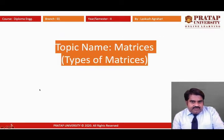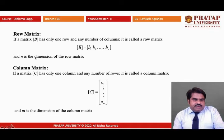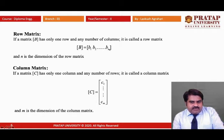Now we will discuss the types of matrix. First is the row matrix. If any matrix has only one row and any number of columns, it is called a row matrix. For example, a matrix with elements B1, B2, up to BN has one row and N columns — this is called a row matrix.